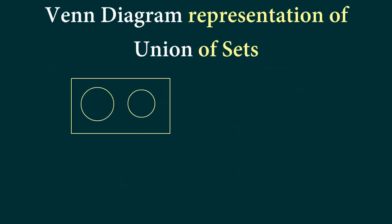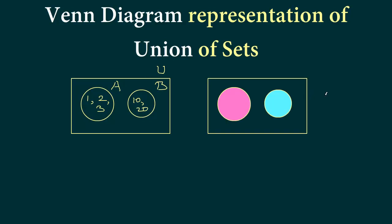For the first example, here is our Venn diagram — this is set A, this is set B, and this is the universal set. We can represent them as non-overlapping circles because there were no common elements: A had 1, 2, 3 and B had 10 and 20. The highlighted or colored part represents A union B.